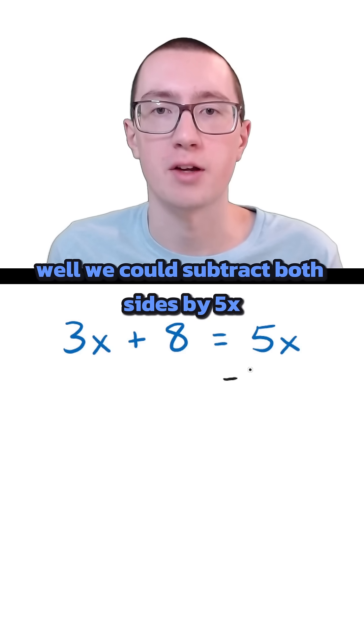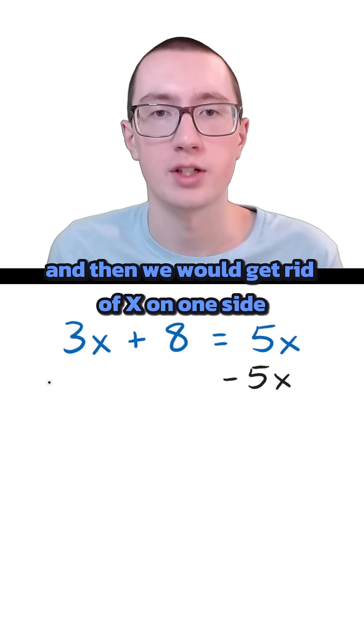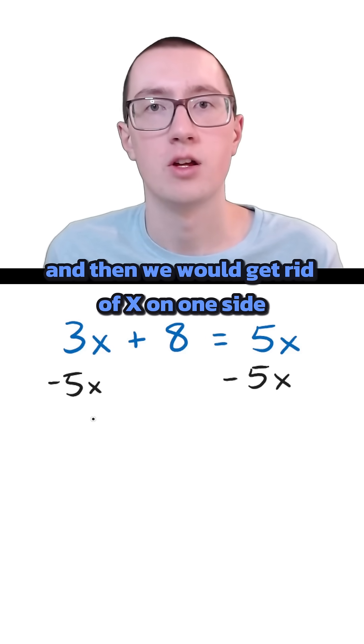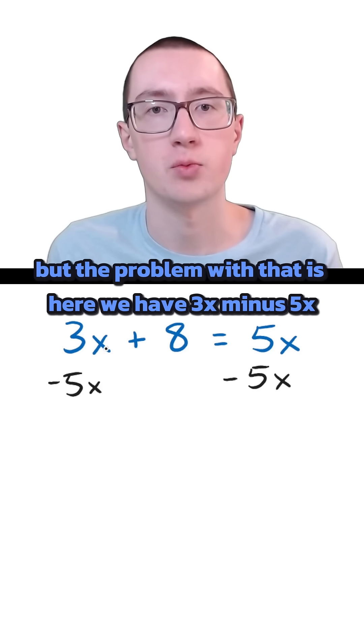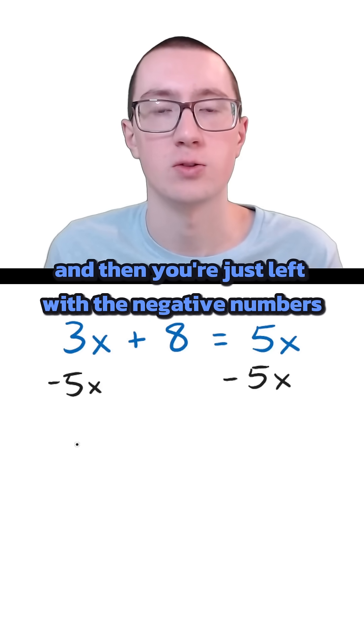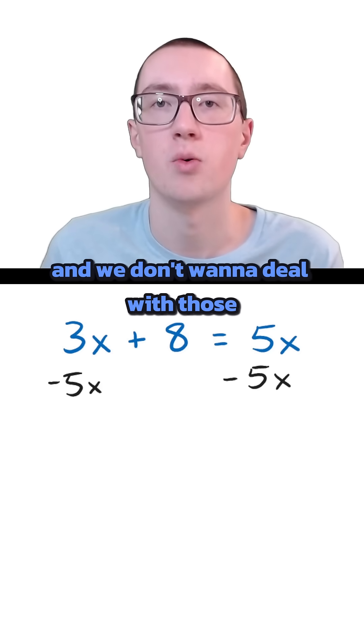Well, we could subtract both sides by 5x, and then we would get rid of x on one side. But the problem with that is here we have 3x minus 5x, and then you're just left with the negative numbers, and we don't want to deal with those.